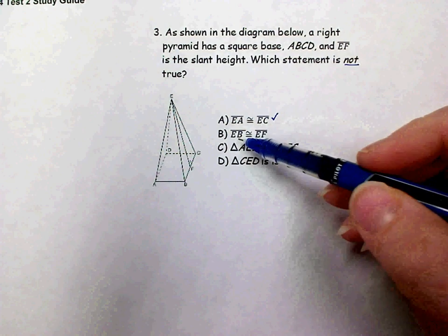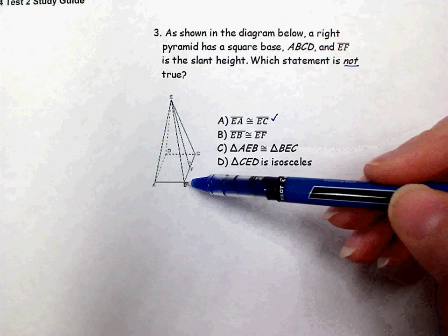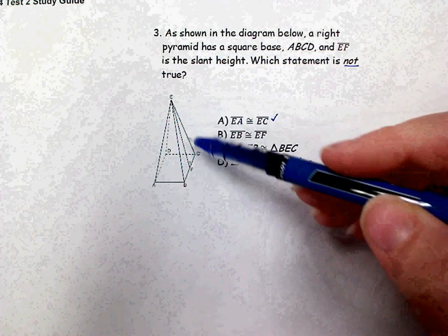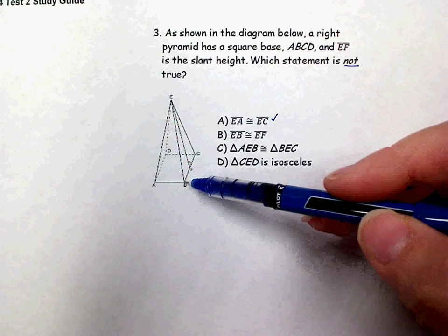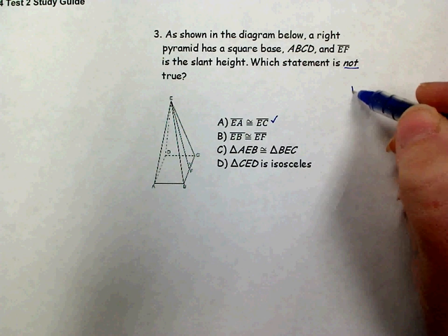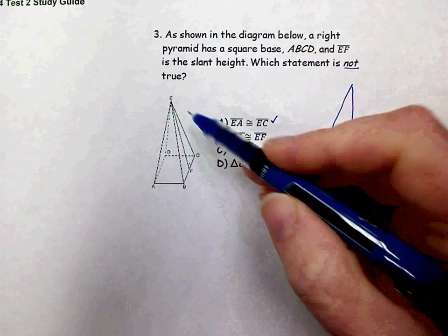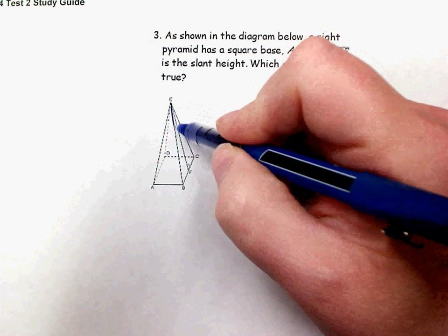On part B it says segment EB, which is from the apex to a vertex, is congruent to EF. EF is our slant height. So the slant height and EB cannot have the same length because the slant height is the perpendicular side of this triangle EFB if you look at this triangle here.